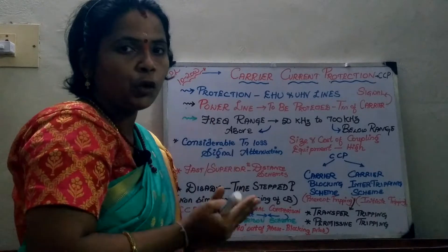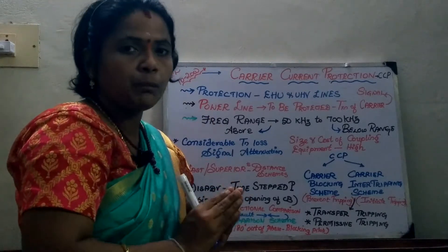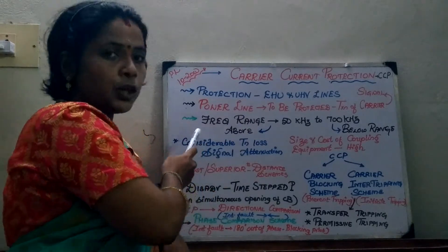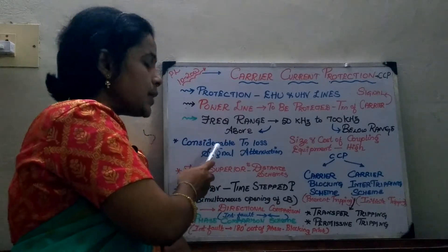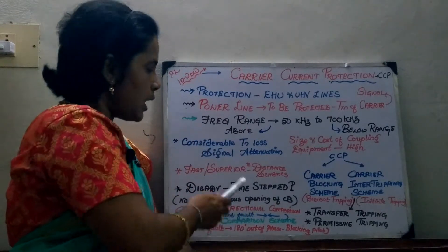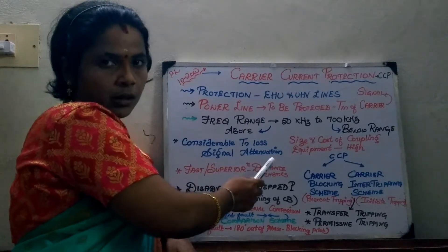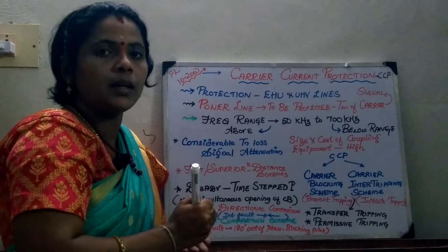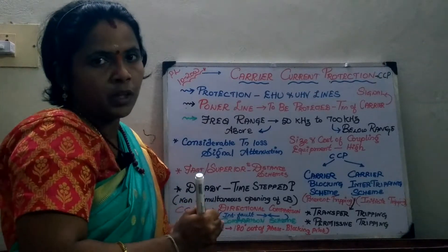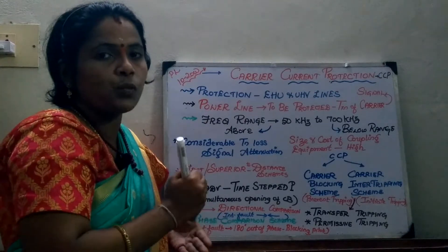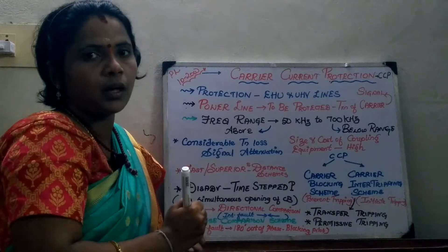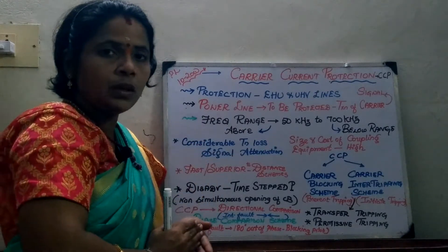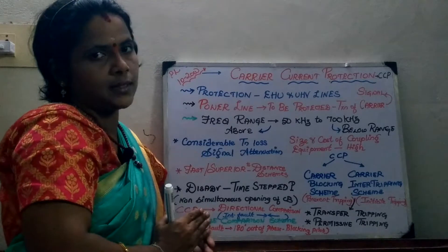Whatever coupling equipment we use becomes costlier below this range. Whereas above this range there is a considerable transmission loss and signal attenuation. The transmission loss incurred is considerable, and the signal attenuation — which is an important factor in carrier wave design — is also quite considerable above that range.